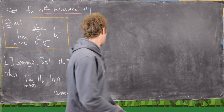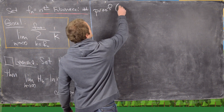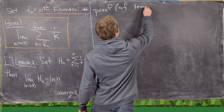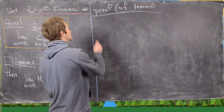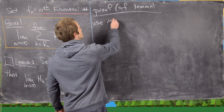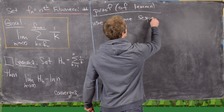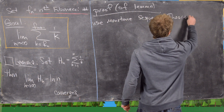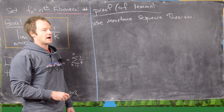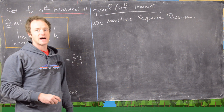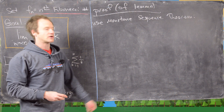So let's first look at this lemma. In order to prove this lemma, we're going to use the monotone sequence theorem. That means we need to show that it's bounded and that it is monotone. We're going to show that it's bounded below and that it is decreasing.